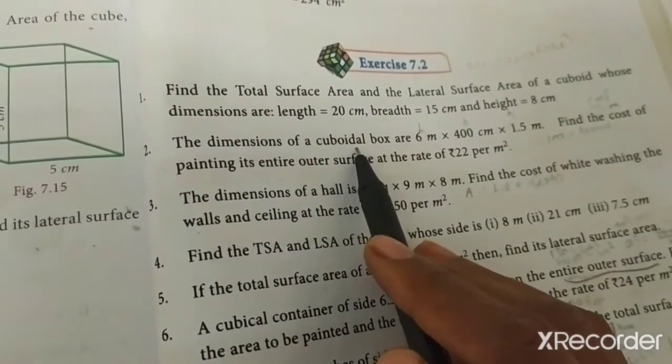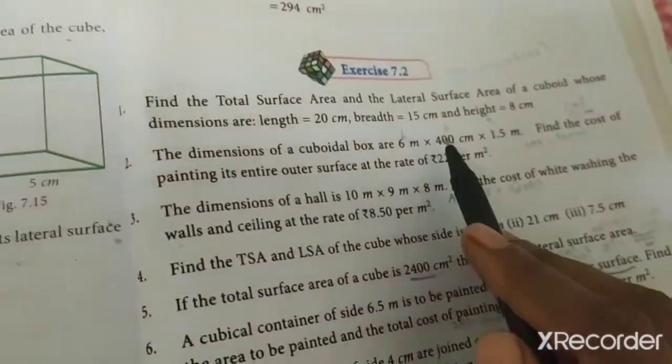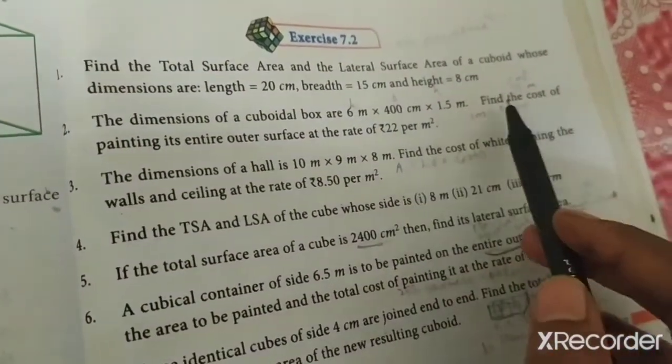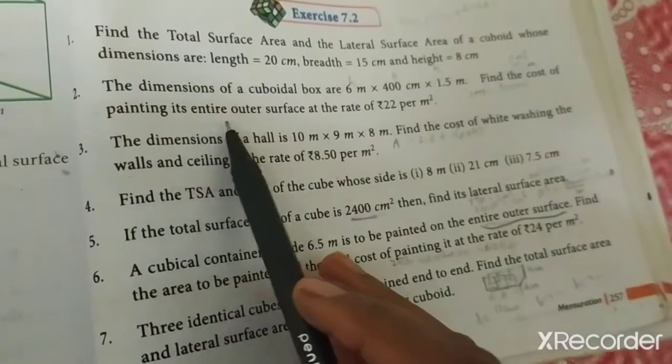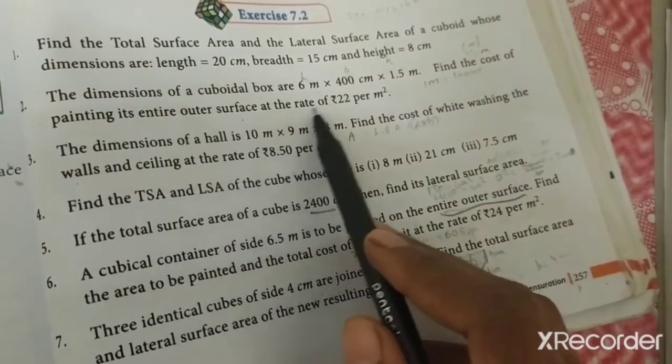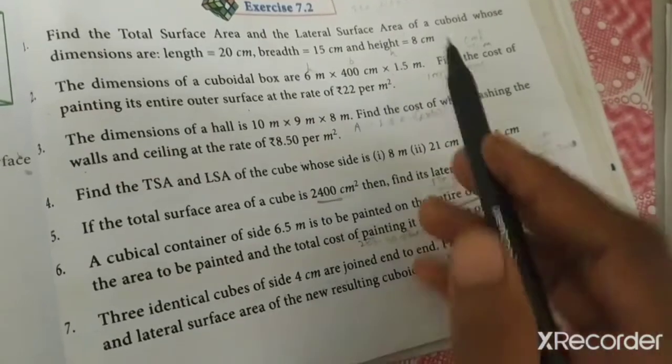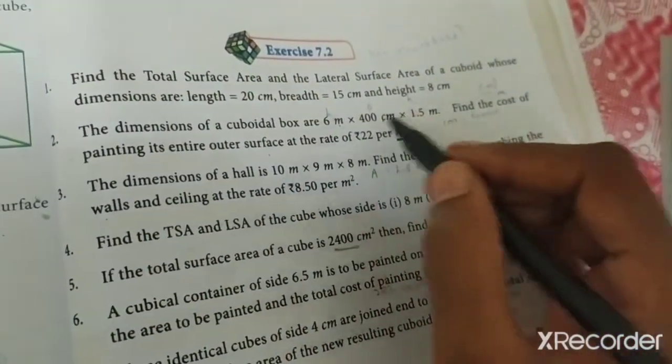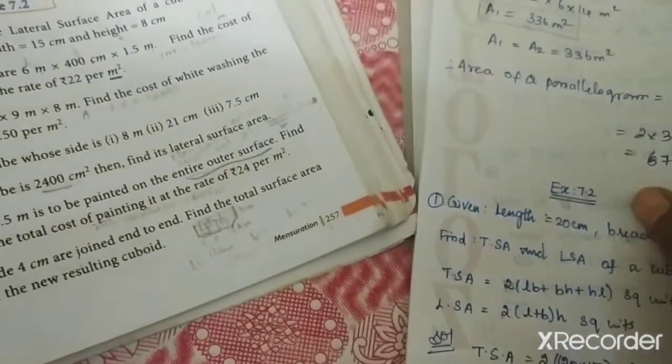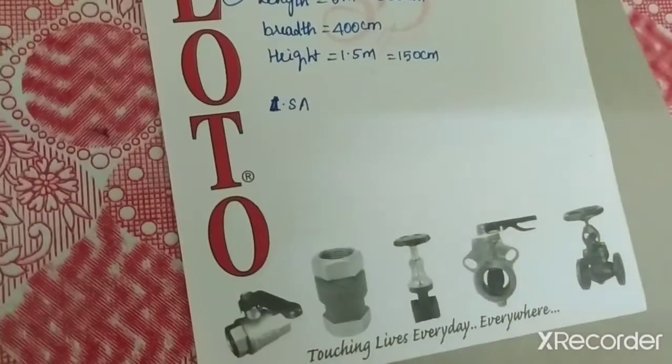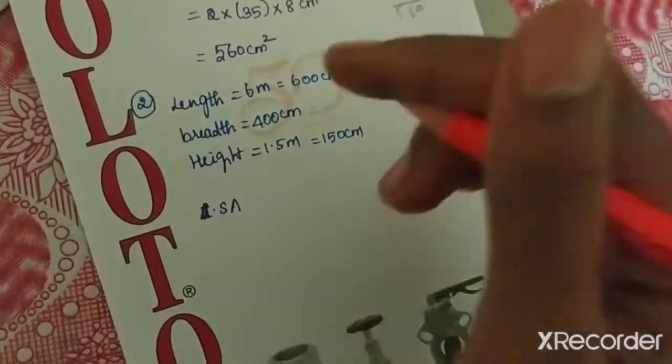We are going to see about surface area of cube and cuboid. For example, I am taking a matchbox. This is a matchbox. This is one of the face. This is one of the face, this is one of the face.